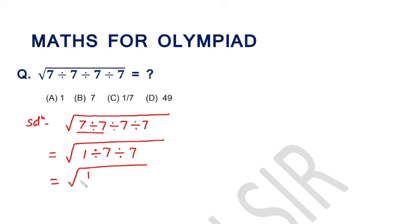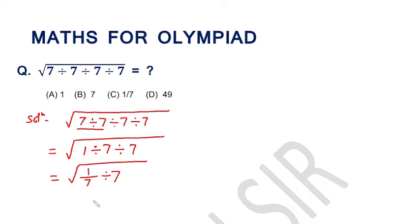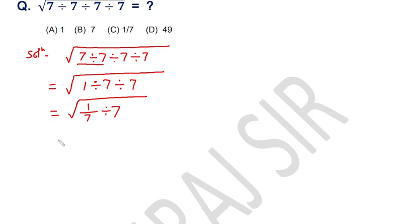1 over 7 divide 7. The square root of 1 over 7 into 1 over 7, that means the square root of 1 over 7 squared.